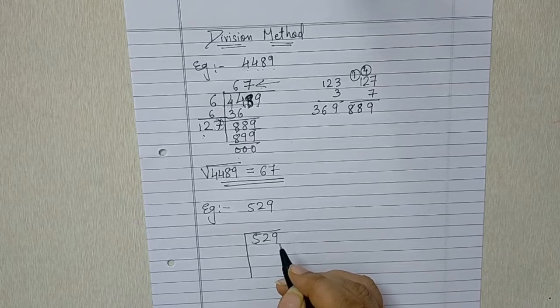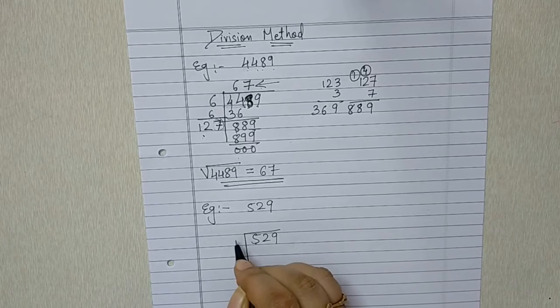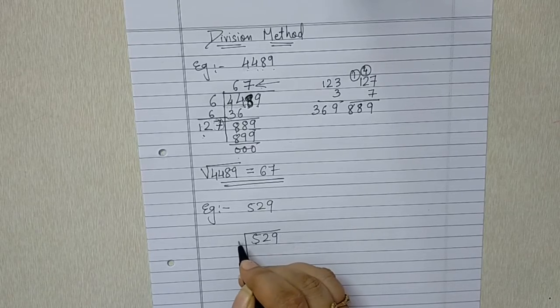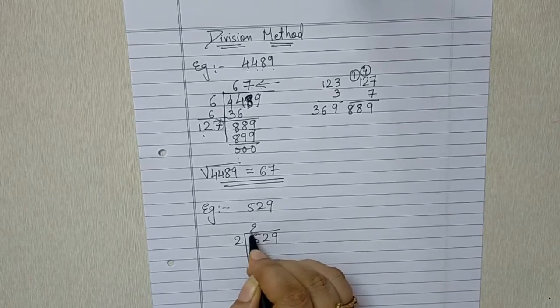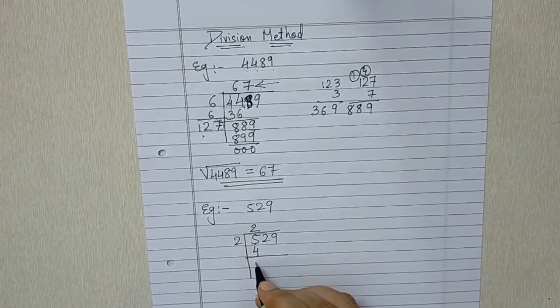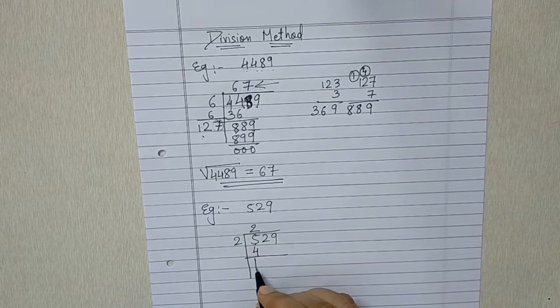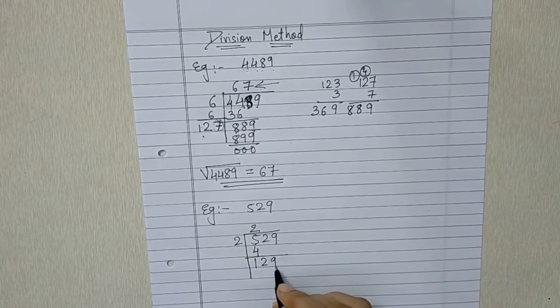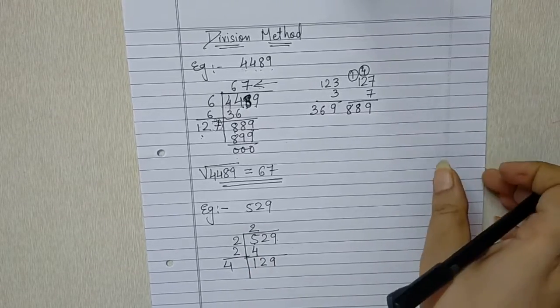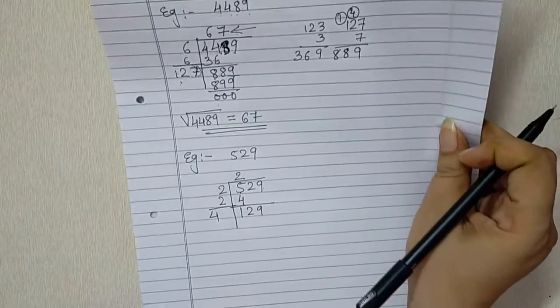Is 5 a perfect square number? No. So square number smaller than 5 is 2×2=4. Subtracting 5 minus 4 we get 1. And then we take 29 down. Here we will be adding 2. We get 2 plus 2, 4.